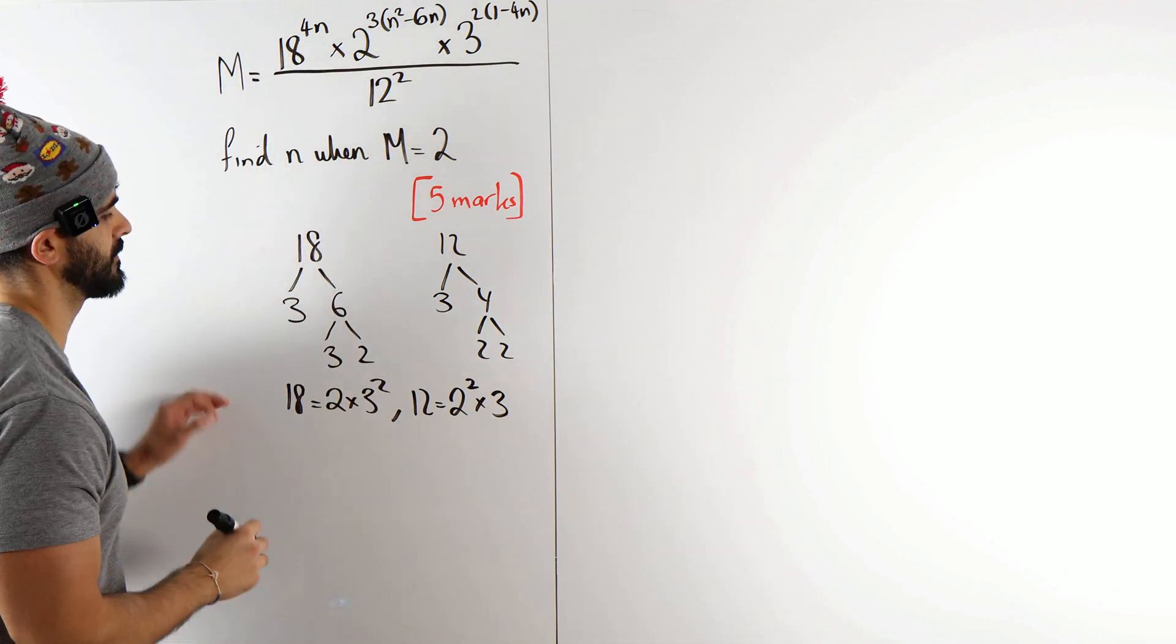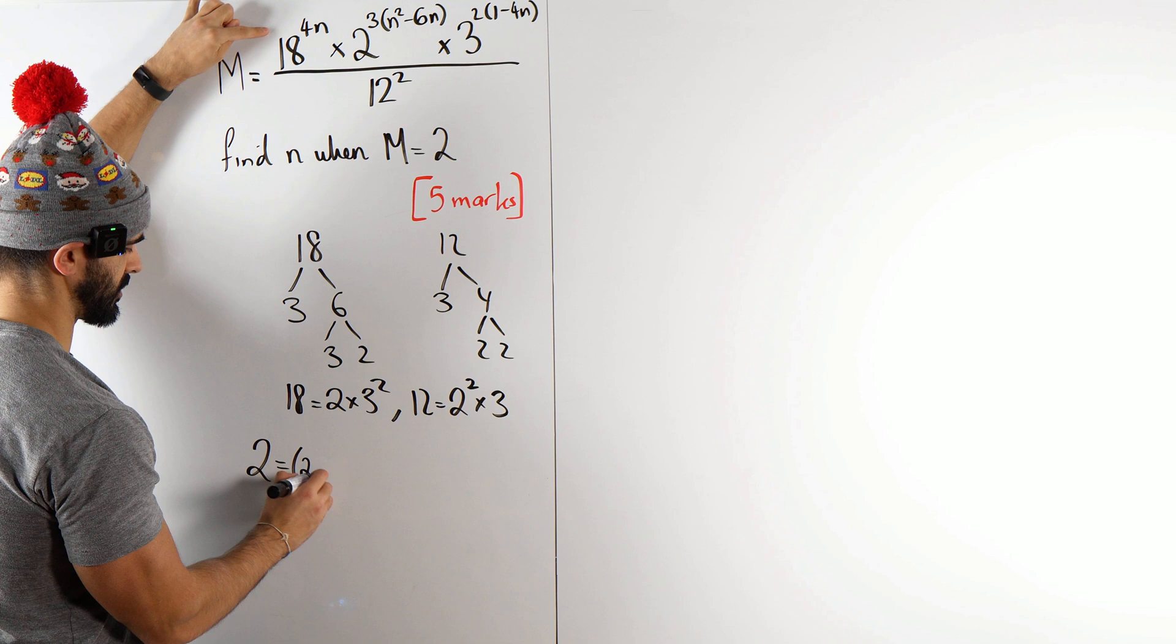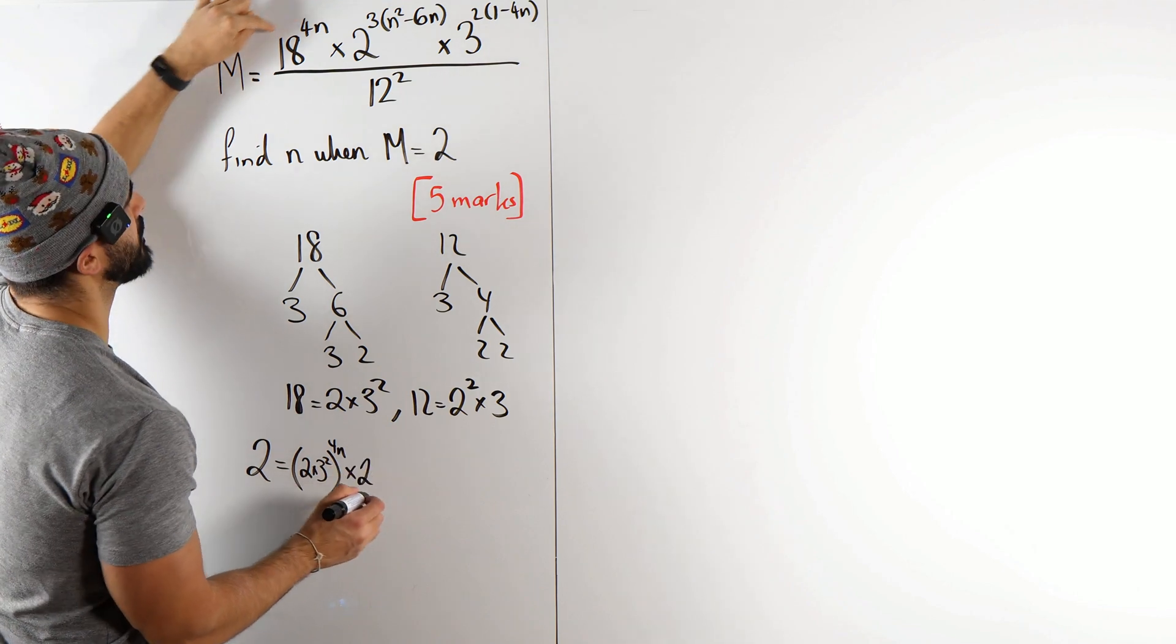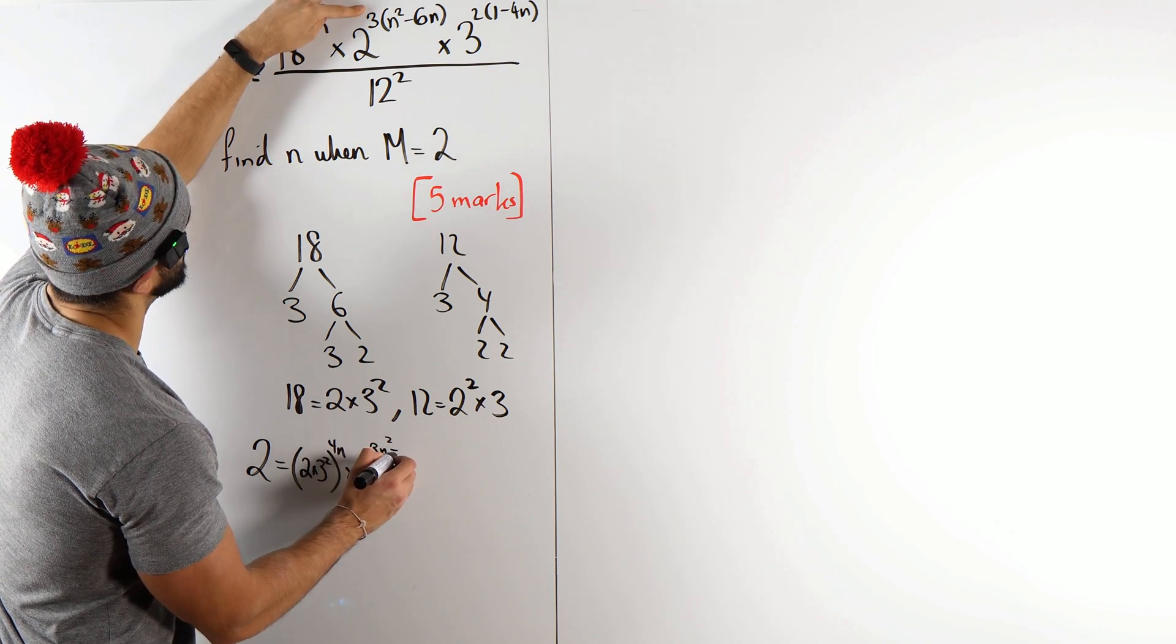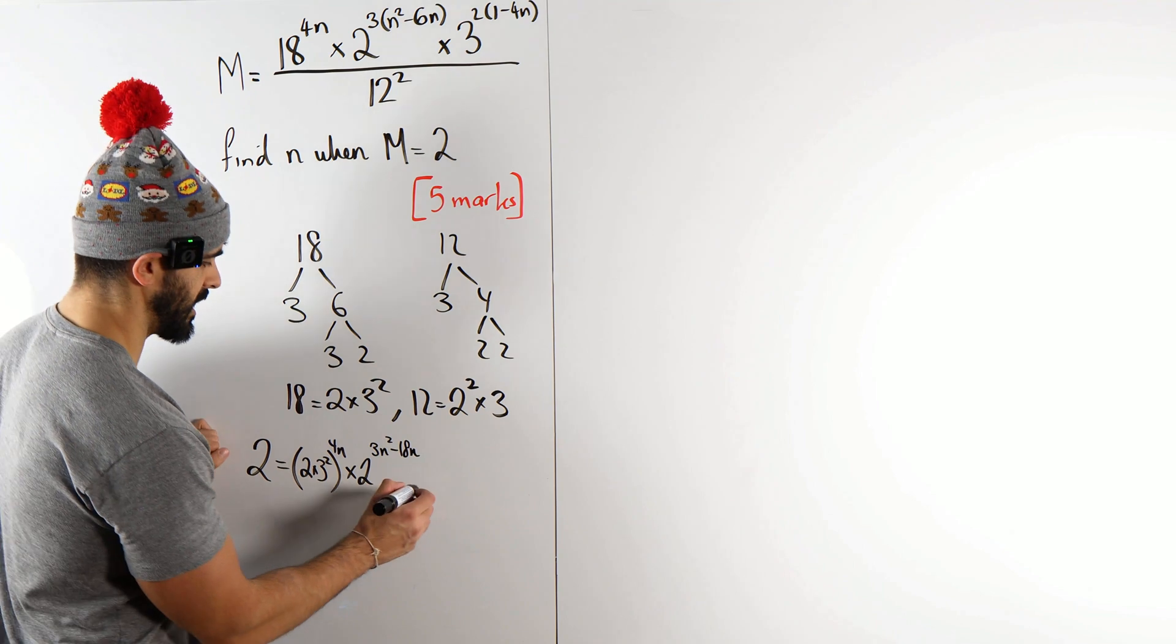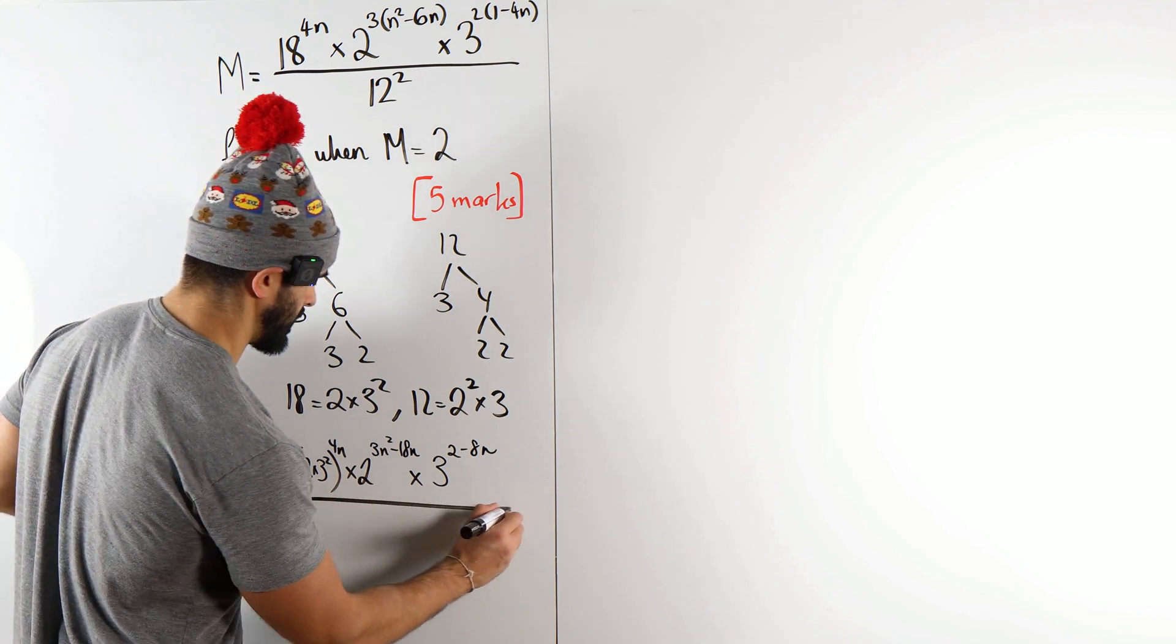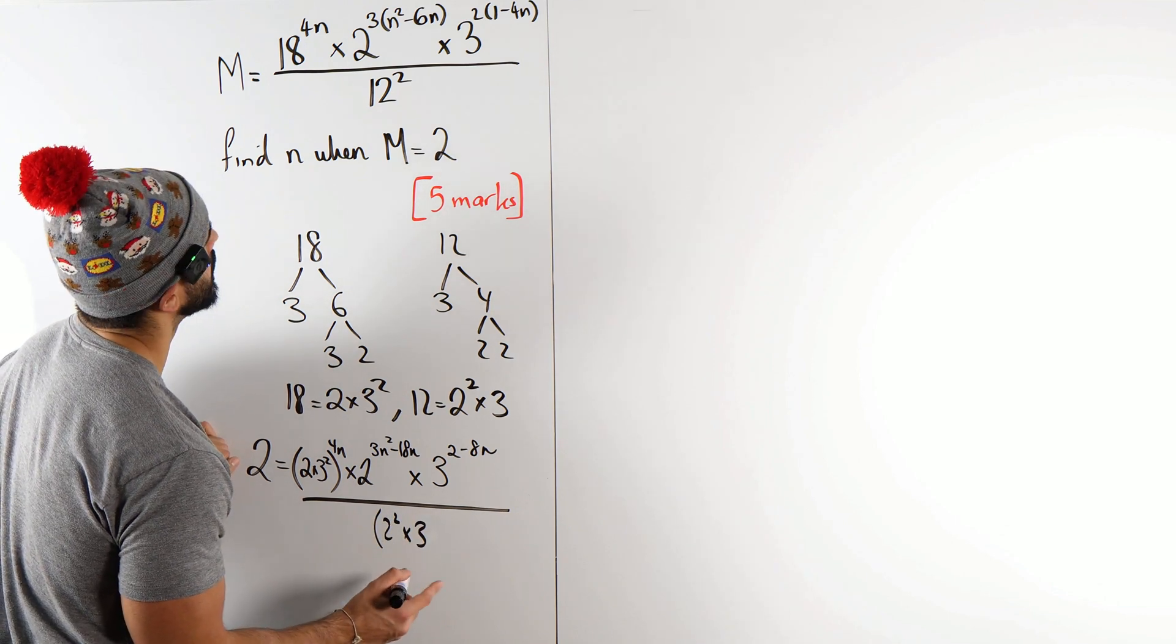And that's where we can replace them here. So we have m is 2, 18 is 2 times 3 squared to the power of 4n times 2 to the power of 3n squared minus 18n times 3 to the power of 2 minus 8n.